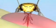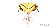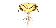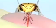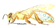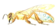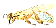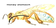The tongue is a flexible tube on the outside of the bee's head. The nectar goes through the bee's mouth and into the honey stomach, where it is stored. The honey stomach is located in the bee's abdomen.